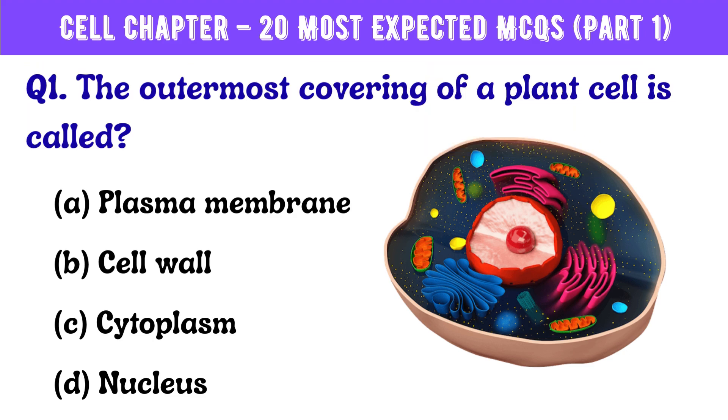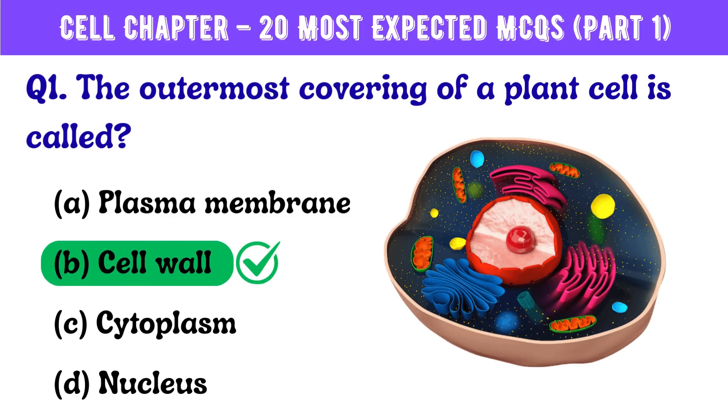Question number 1. The outermost covering of a plant cell is called? Correct answer is option B: Cell wall.